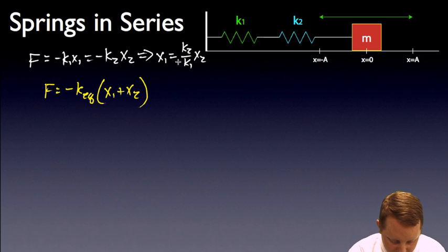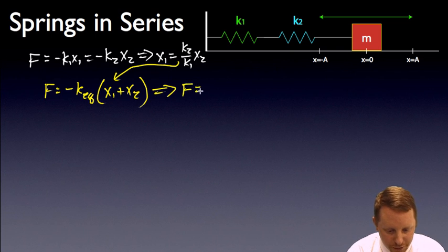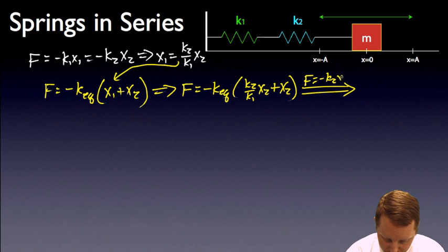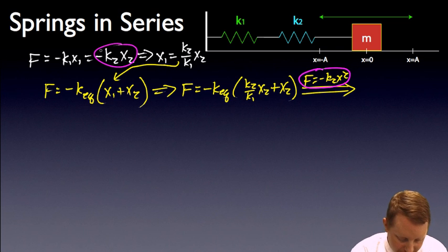Now when I do that then, I can use the fact that x1 equals k2 over k1 times x2 to rearrange this to say that the force must be equal to minus k equivalent, now replacing x1 with k2 x2 over k2 over k1 x2 plus x2. And a little bit more algebra, since we also know that our force is equal to minus k2 x2. That comes from that,